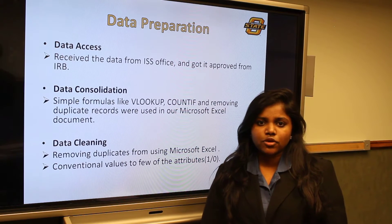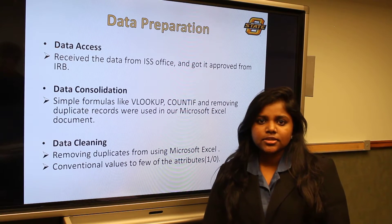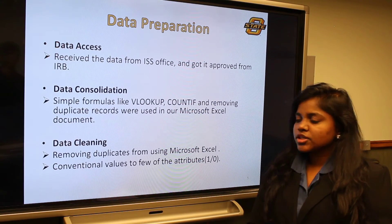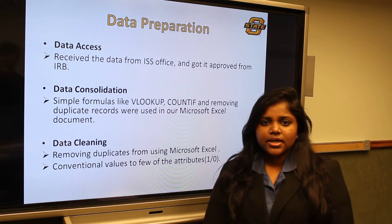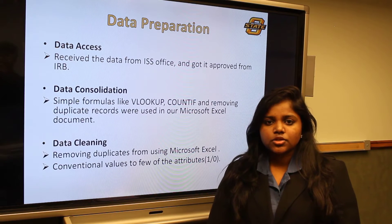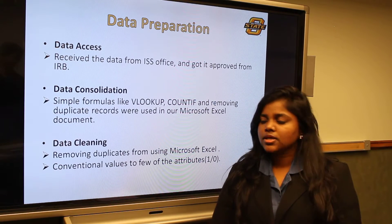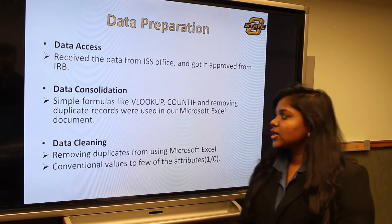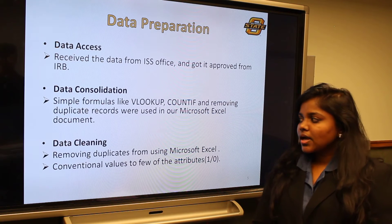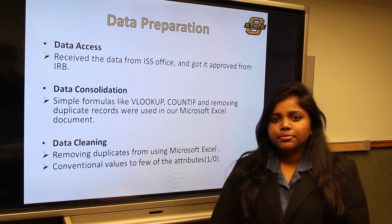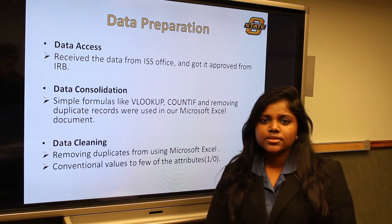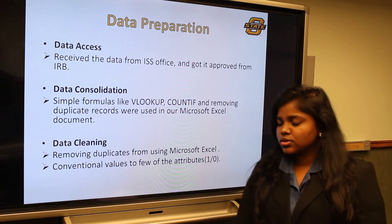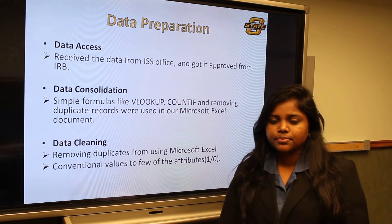Going to data access, we got the data in a primitive format which was later consolidated and got it approved by the IRB. For consolidation, we got the data in the format of Excel sheets, and we used simple formulas in Excel like VLOOKUP, COMPDEF, etc. In data cleaning, removal of duplicates is necessary because from the data given to us, a number of duplicates were found and conventional values were also included for a few of the attributes.